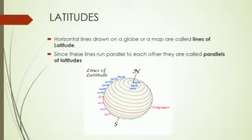Since these lines run parallel to each other, they are called parallels of latitude, meaning the distance between different parallels of latitude is the same.